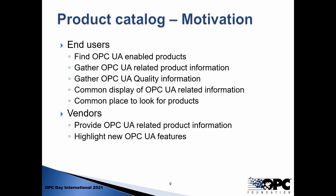End users are seeking a way to find OPC UA enabled products where they can really gather product details which are just about OPC UA. They're not looking for cycle times in PLCs, for example, but they want to search for a specific OPC UA feature supported in a PLC, as well as quality information about that OPC UA integration. Vendors are also seeking a way to provide OPC UA related product information and highlight new features, and that is where the new product catalog is basically stepping in.